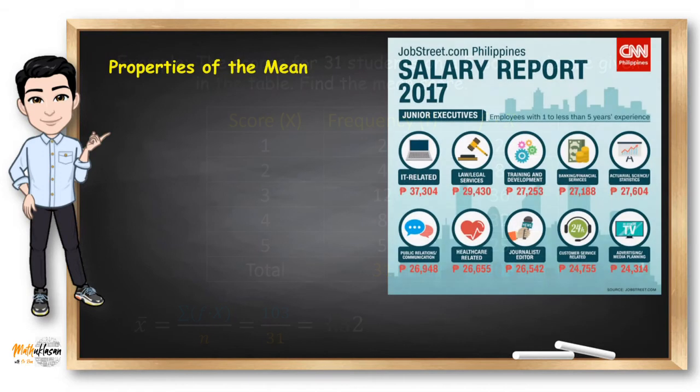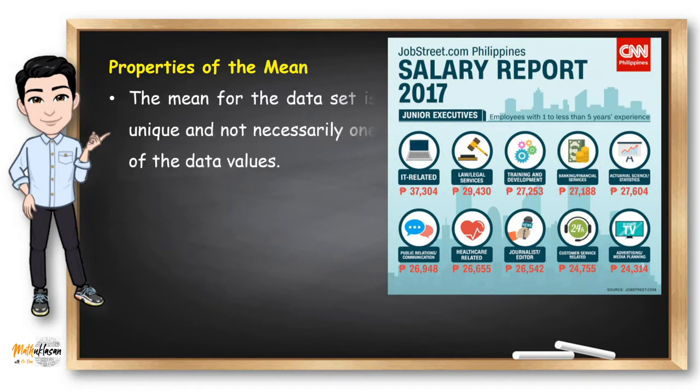There are some properties of the mean that we need to remember. The mean for the data set is unique and not necessarily one of the data values. The data on the right shows the top 10 highest paid jobs in the Philippines. If you're going to apply for a junior executive position, the highest paying are IT related jobs. But if you're already a junior executive in an IT firm, your salary may be higher or lower than this amount.